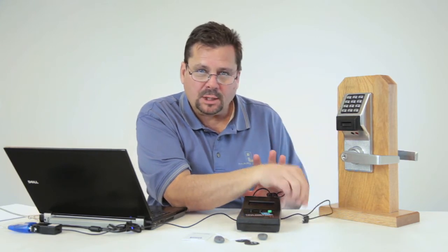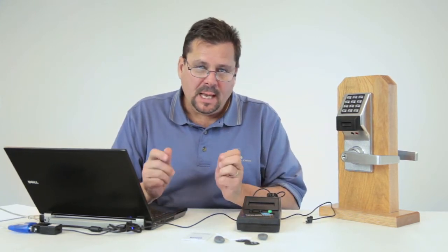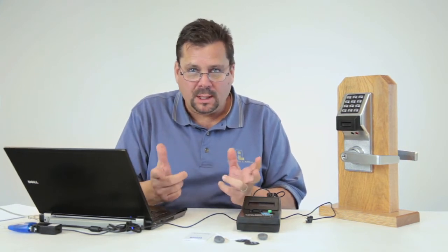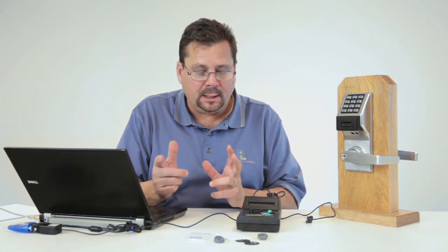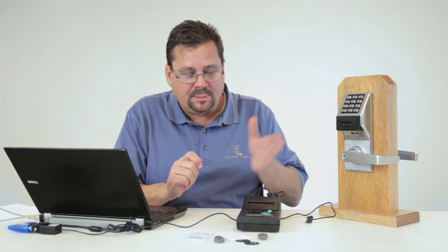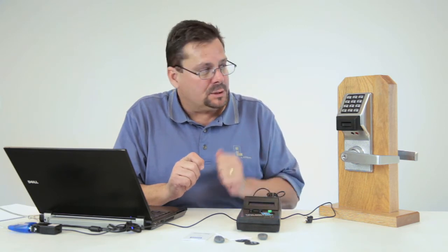Now, the key is, I haven't set this lock up yet to accept the DTM. Earlier in the segment, what we talked about when setting up a basic system is that the DTM is an actual user. We refer to it as a parking spot. It's user or parking spot number 299. The first thing that I have to do is I have to get this lock ready to accept the DTM when I plug it in. So let's do that.